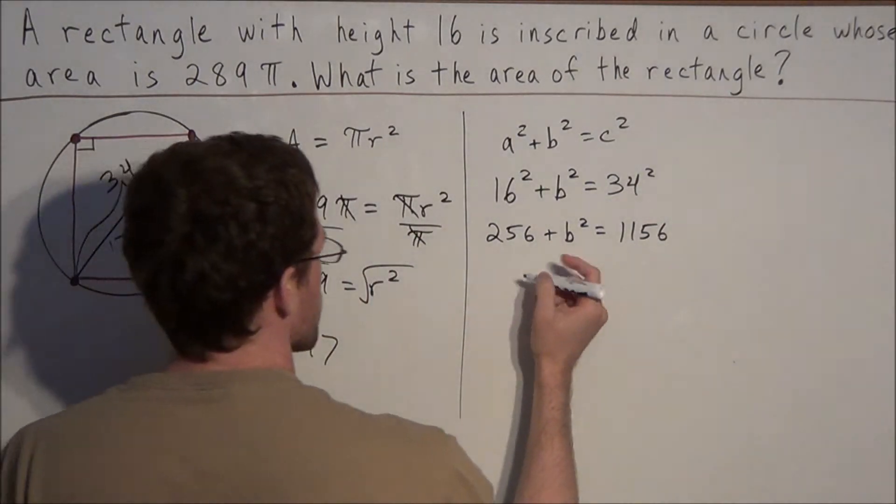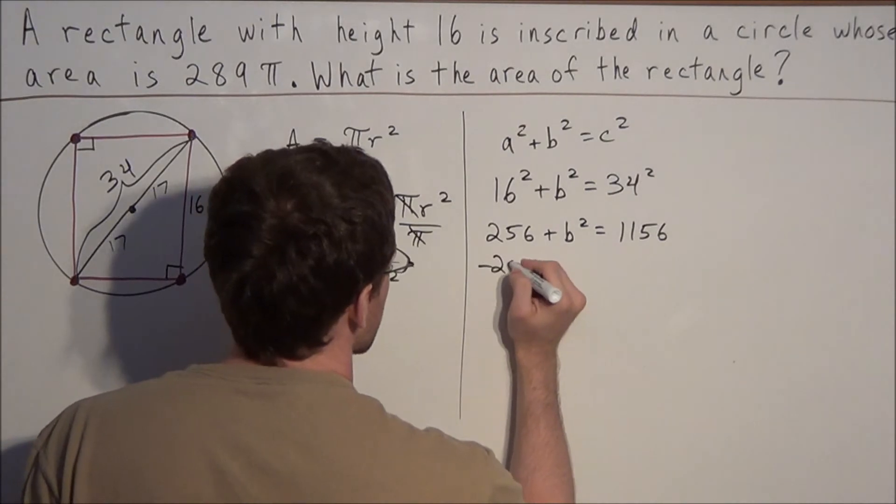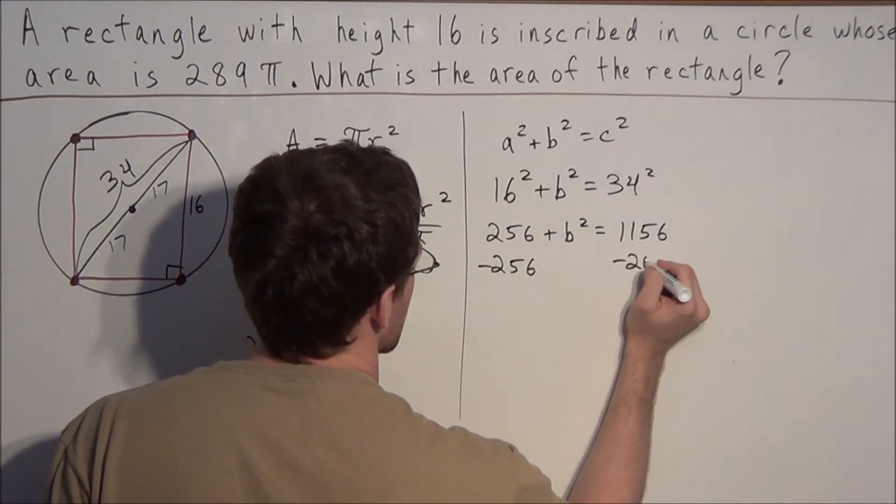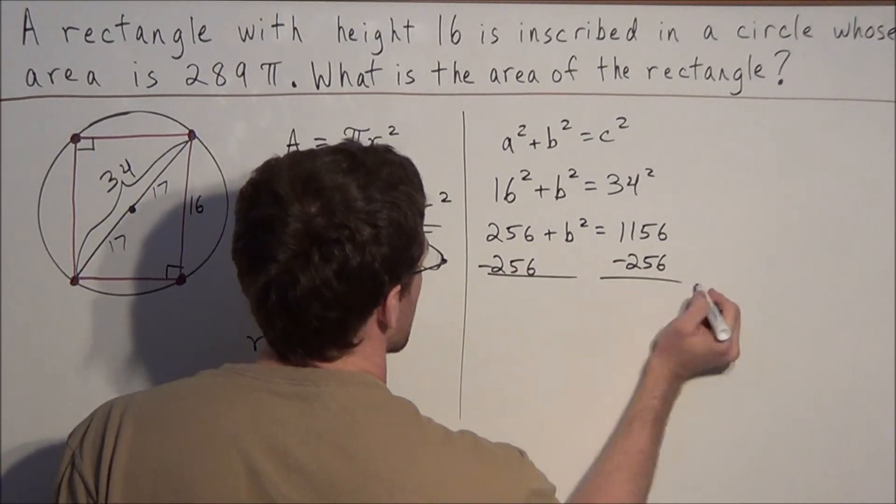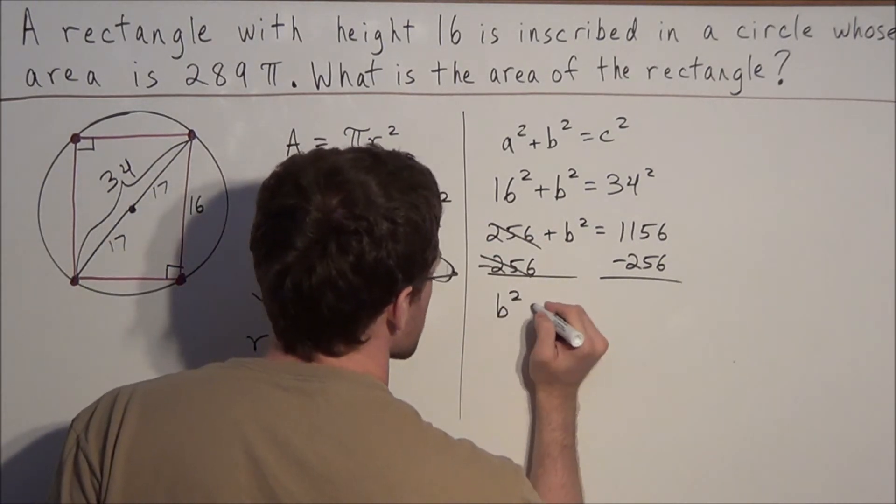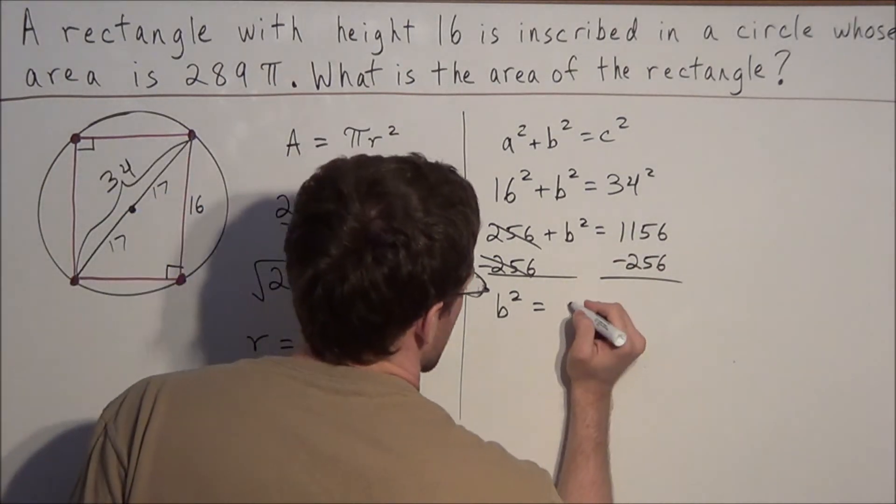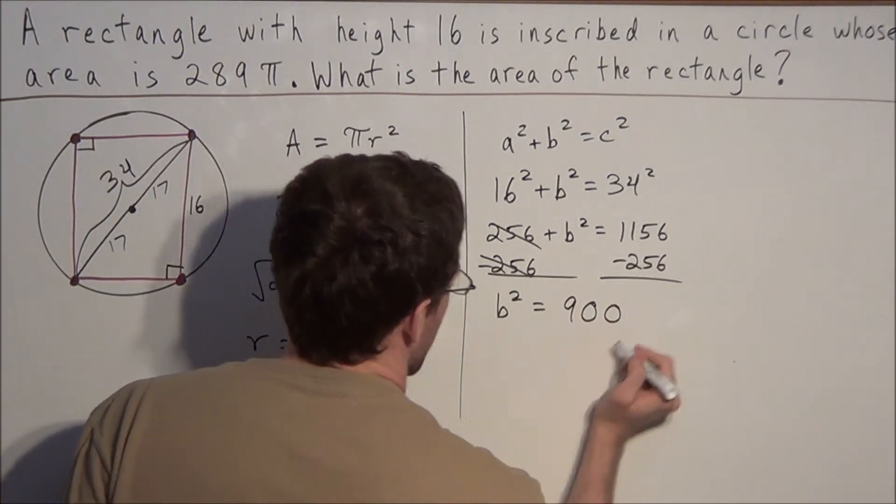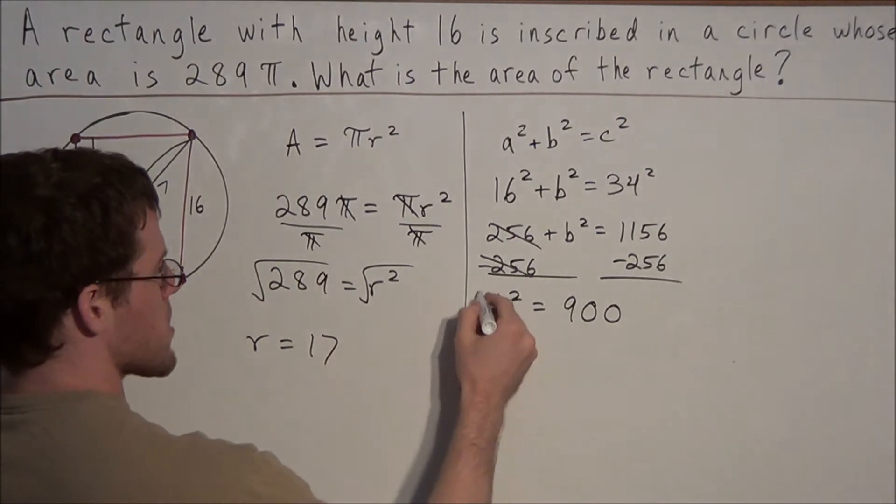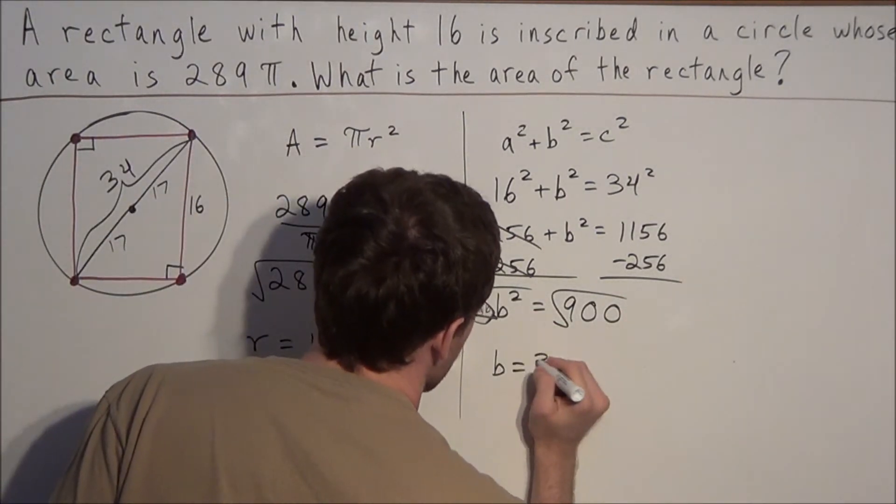So now all we need to do to solve for b, or the missing leg, we're going to subtract 256 from both sides. 256 minus 256 cancels. And we have b² equals 1156 minus 256 is 900. And now to find the length of the missing leg, we just take the square root of both sides. And we have b equals 30.